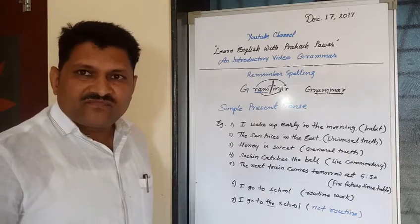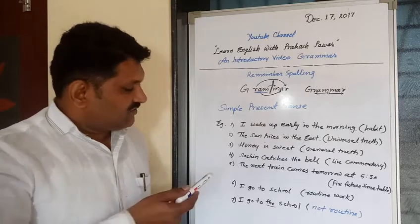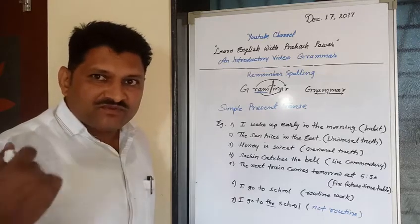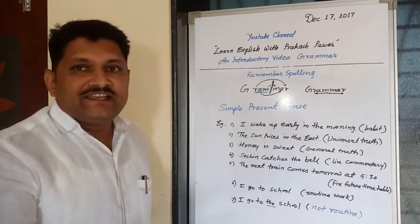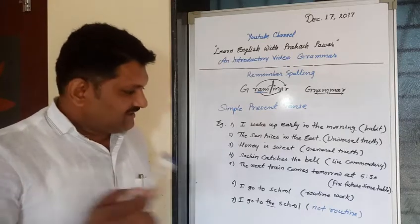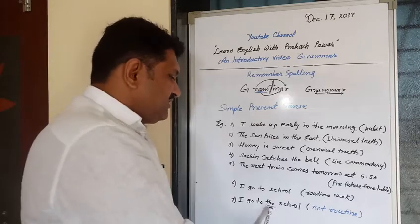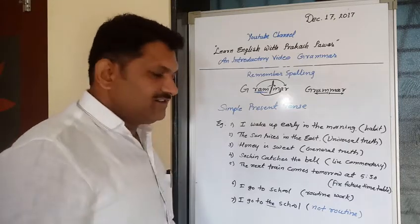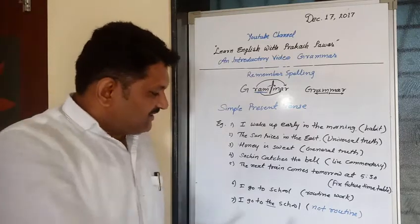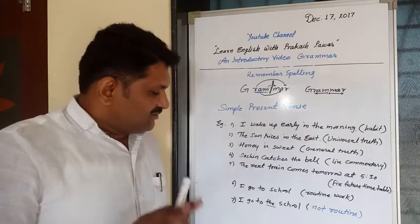For routine work: 'I go to school' — this means I am a student or I am a teacher. It is my routine work to go to school daily. But the next sentence, 'I go to the school' — when we use the article 'the,' the meaning changes completely.